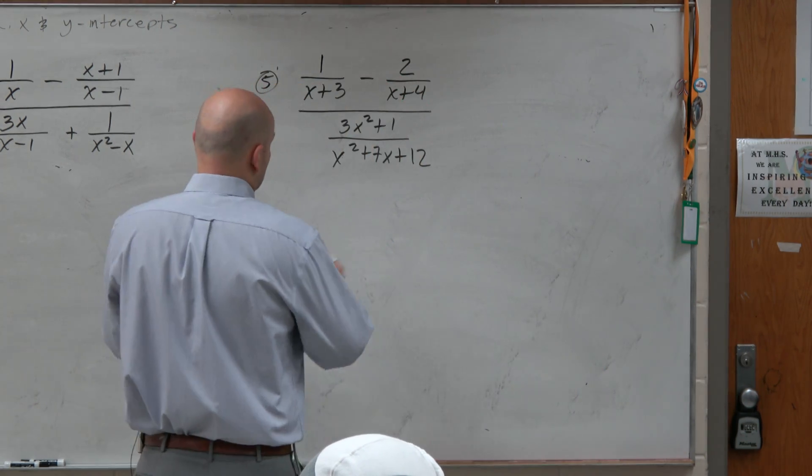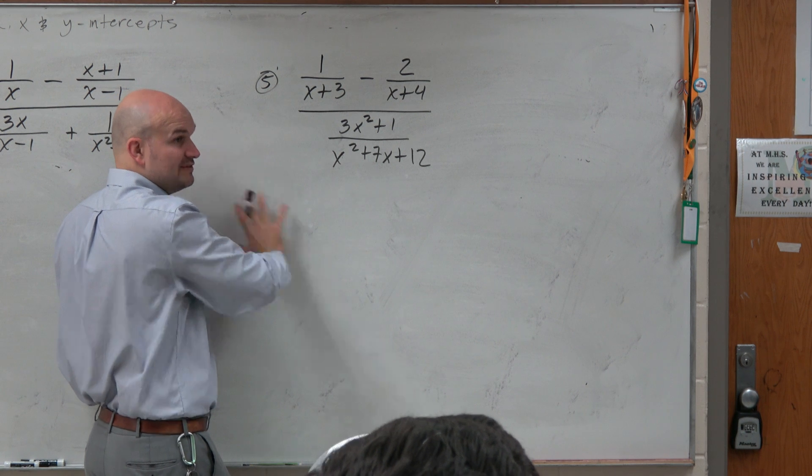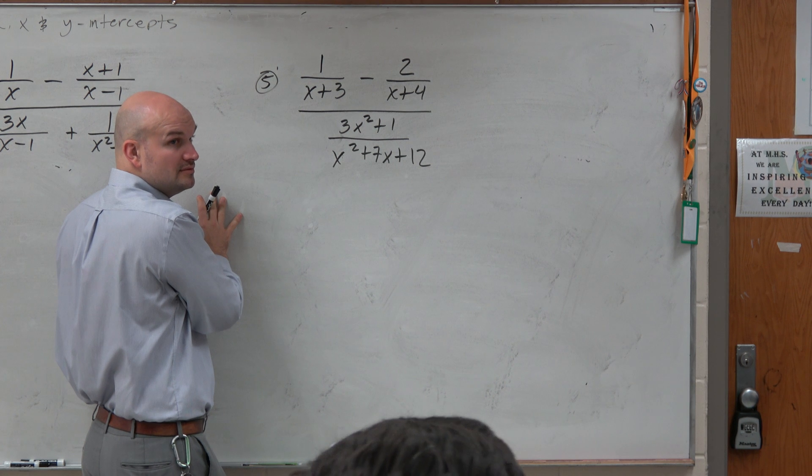So the first thing you want to look at is what values will make the denominator 0. And you can see there's a lot of different fractions, a lot of different things going on here, right?